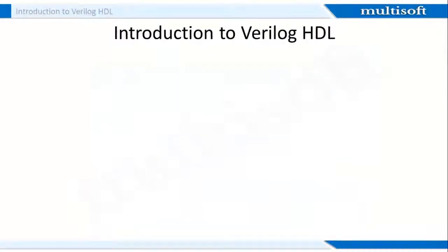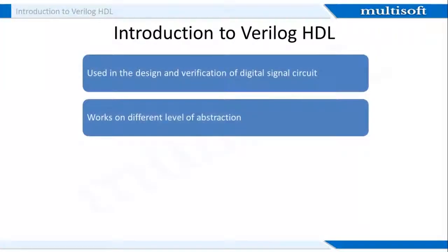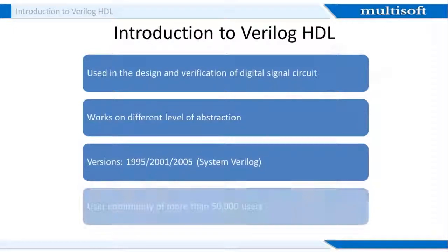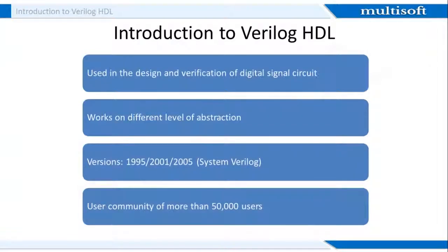Verilog HDL allows designers to design at various levels of abstraction. This language basically has three versions: Verilog 95, Verilog 2001, and Verilog 2005. The first two versions are specific for design and implementation purposes and the third version is used for verification purpose. Last but not the least, it is the most widely used HDL with a user community of more than 50,000 active designers.